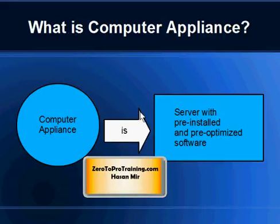Let's say you have a need to host a website for your company. You go and buy a computer, then install a web server so you can host a web-based application. You can buy the computer from any vendor and the web hosting software from another vendor, install it, and start using it. That is the normal, non-appliance-based approach.